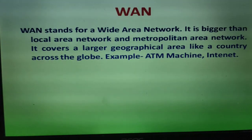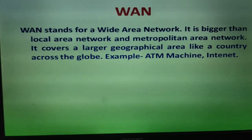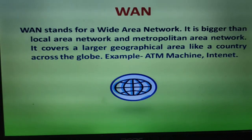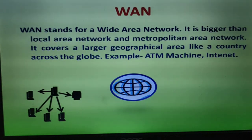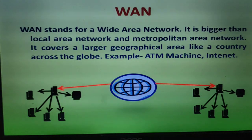Examples of WAN are ATM machines and the internet. For example, with an ATM machine, suppose we are in Delhi — we can withdraw money from any country or any city in India. On the diagram, this represents the world, with one country as one network, a second country as another network, all connected together. This is a good example of a Wide Area Network.